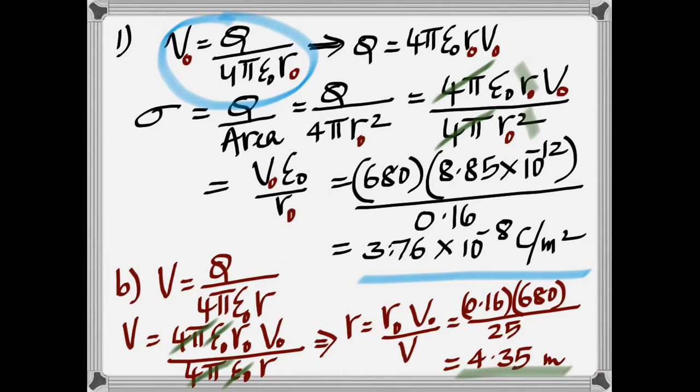In the B part, the question says at what distance will the potential be only 25 volt? So now you are given the potential. Now rearrange this and calculate it as 4.35 meter.